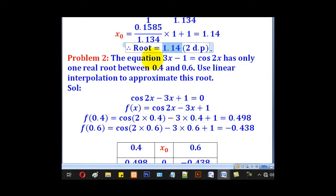Problem 2: The equation 3x - 1 = cos 2x has only one real root between 0.4 and 0.6. In this case, that equation will be our f(x). Get the corresponding values of f(x) for 0.4 and 0.6. For 0.4, we shall get 0.498, and for 0.6, we shall get -0.438.